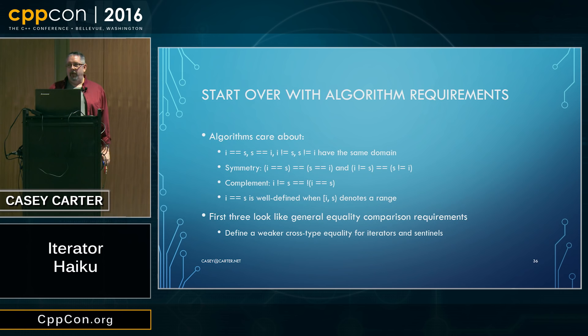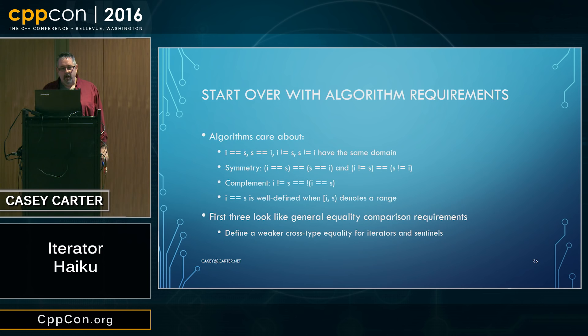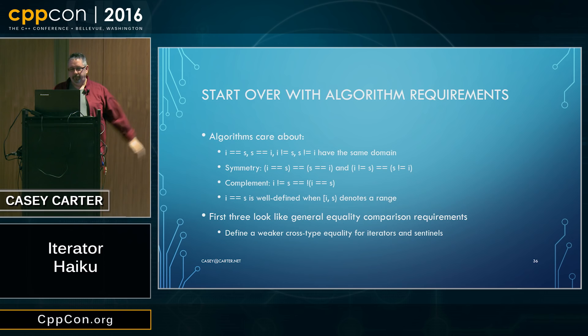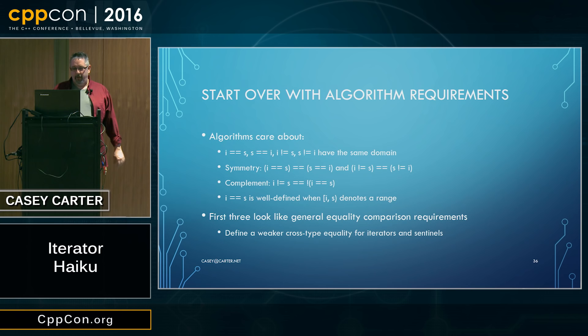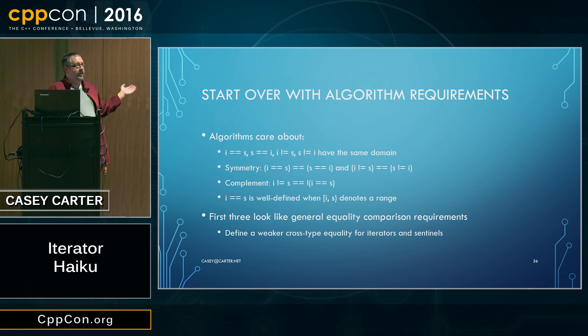I went back and examined the algorithms. The algorithms don't use equal-to or not-equal-to on single-pass iterators. So I asked: what do the algorithms do with sentinels? The algorithms care that equality for iterator and sentinel, and inequality for iterators and sentinels, all have the same domain. They care about symmetry — that i equals s means the same thing as s equals i. They also care about the complement requirement — that not-equals has to have the opposite meaning of equal-to. These first three look like general requirements for equality comparison, not iterator/sentinel specific.